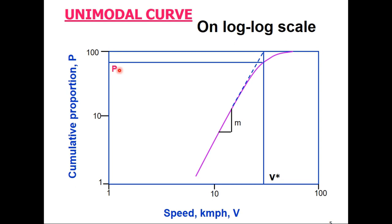This V star is referred here as a transitional speed because this indicates the point from where this curve changes from straight line to curvilinear. We extend this straight portion of the curve to P equals 1 and then drop a perpendicular here. This is the speed on x-axis V star and corresponding proportion is P star.